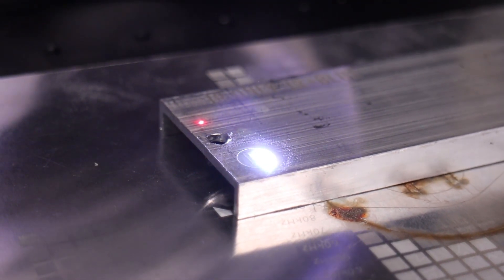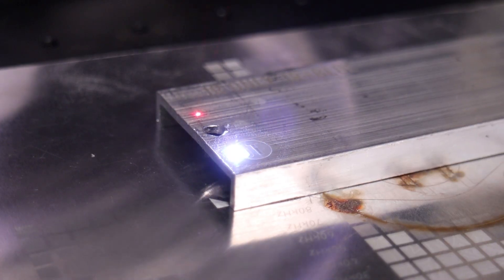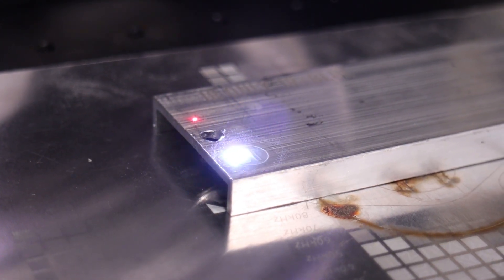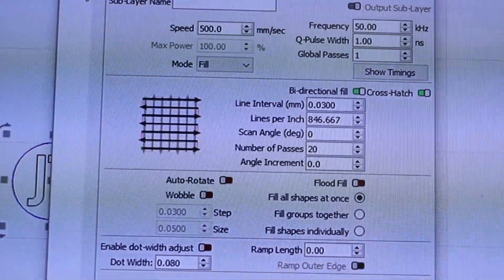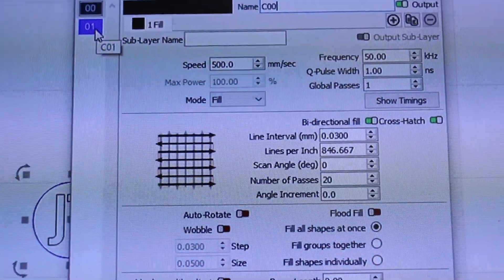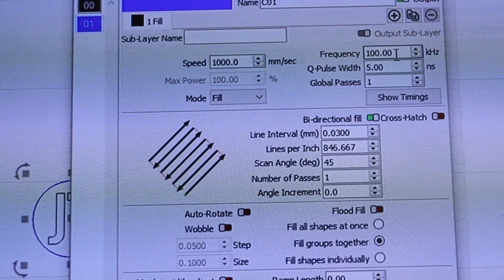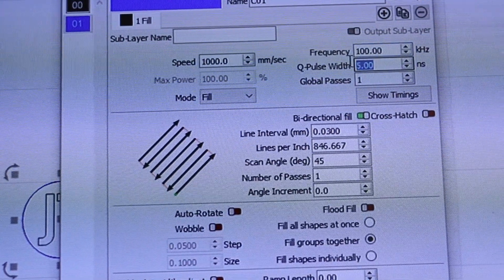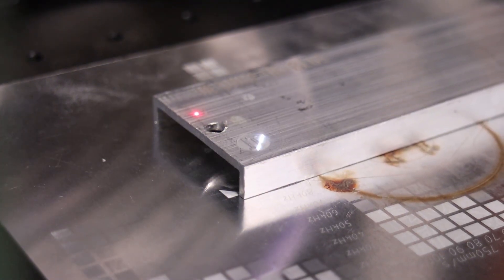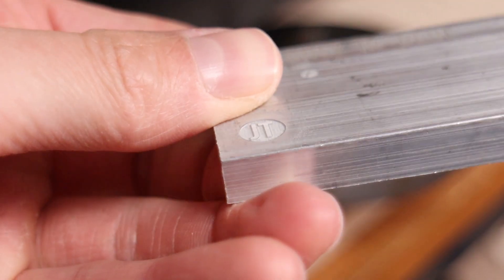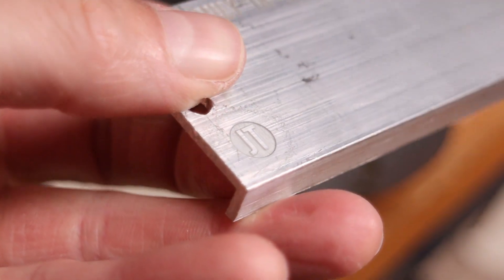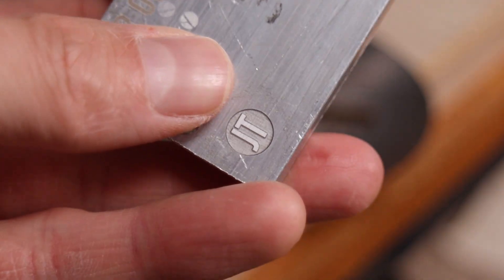I also performed a deep engraving on raw aluminum using 20 passes at a relatively high speed of 500 millimeters per second. For deep engraving, I used 50 kilohertz and 1 nanosecond pulse, and at the end I ran a cleaning pass with double the speed at 100 kilohertz and a 5 nanosecond pulse. The result was stunning. Clean, sharp, and with impressive depth.